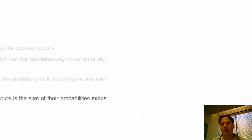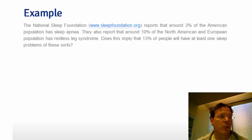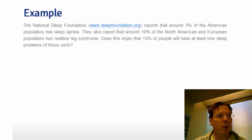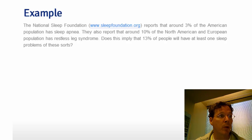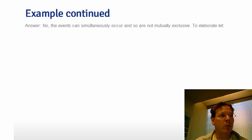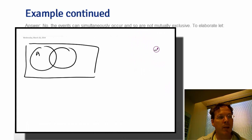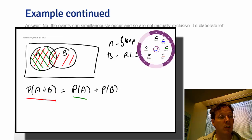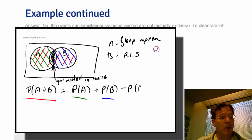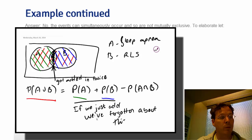The National Sleep Foundation reports that around 3% of the American population has sleep apnea. They also report around 10% of the North American and European population has restless leg syndrome. Let's assume for the sake of argument these are probabilities from the same population. Can we simply add these and conclude that about 13% of people have at least one sleep problem? The answer is no — the events can simultaneously occur and so are not mutually exclusive. We think there is a non-trivial component of the population that has both sleep apnea and restless leg syndrome. Let A be the event a person has sleep apnea and B be the event they have restless leg syndrome. Since this intersection is non-trivial, if we add the two probabilities, we will have added it in twice, and it would need to be subtracted out to find the probability of the union.